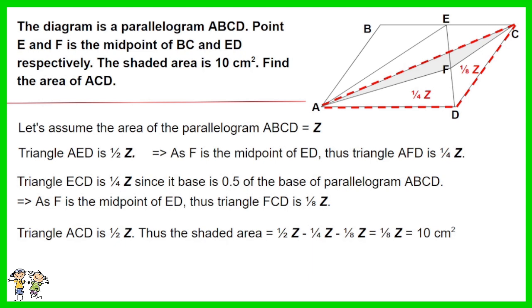As such, one eighth Z equals 10 cm². Triangle ACD is half Z, which equals four times one eighth Z. Thus the area of triangle ACD is 40 cm².